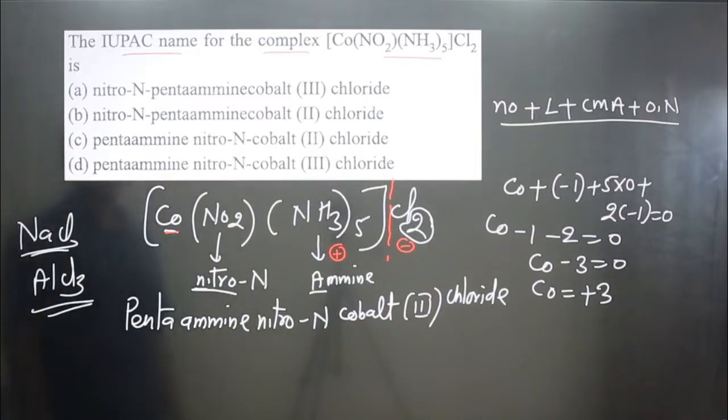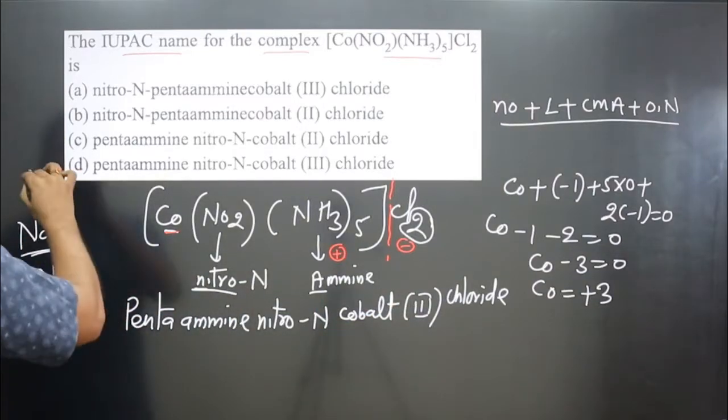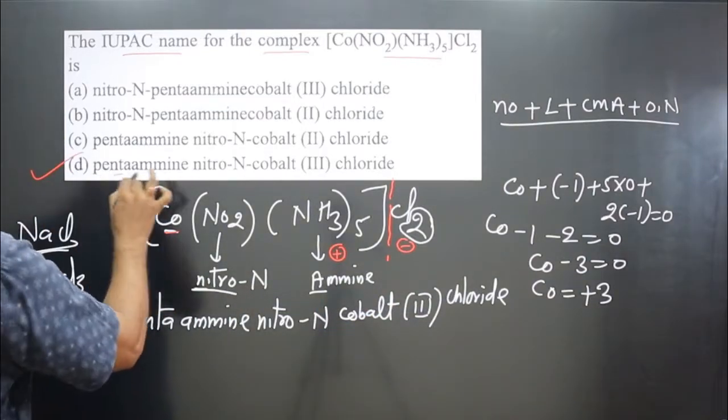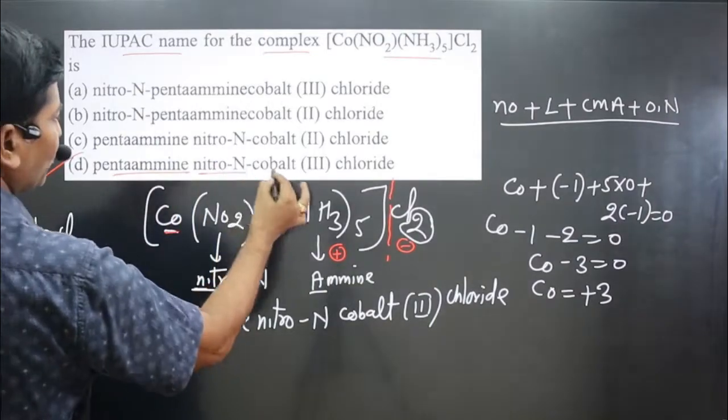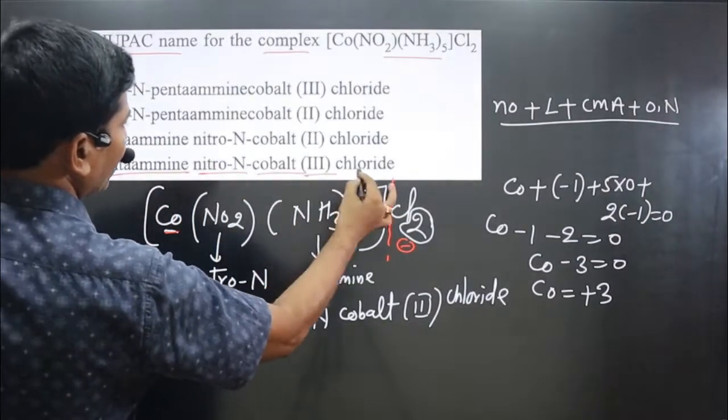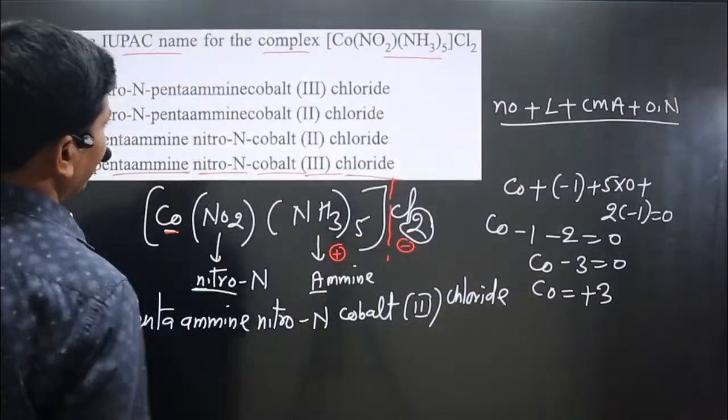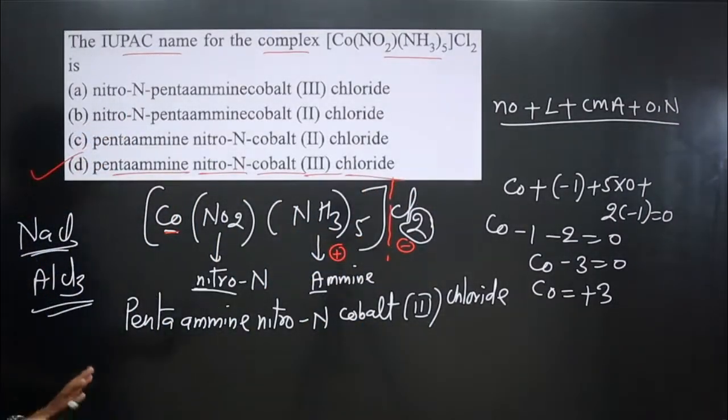So the final IUPAC name is: penta-amine nitro-N cobalt(III) chloride. Looking at the options, option D gives penta-amine nitro-N cobalt(III) chloride. This is the correct IUPAC name.